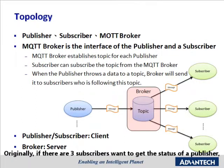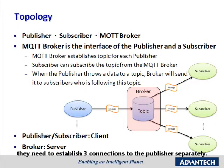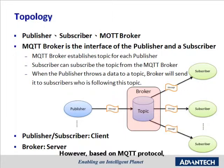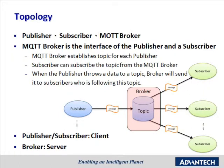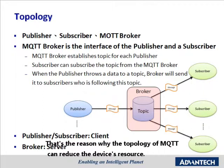Originally, if there are three subscribers who want to get the status of a publisher, they need to establish three separate connections to that publisher. However, based on MQTT protocol, publishers just need to establish one connection with the MQTT broker. That's the reason why the topology of MQTT can reduce the device's resource usage.